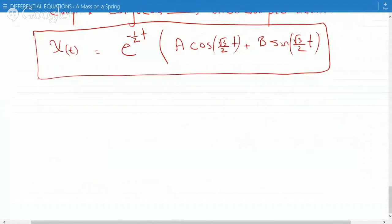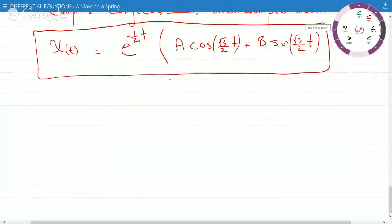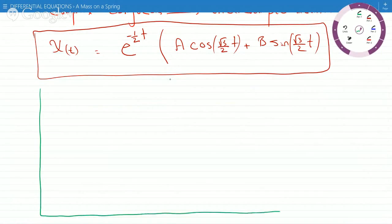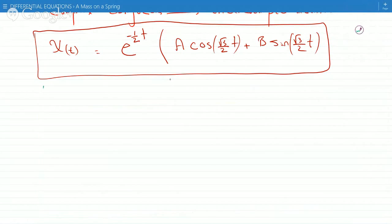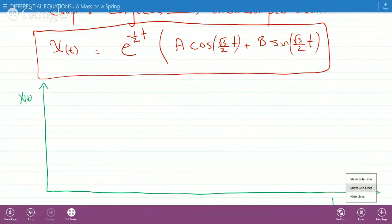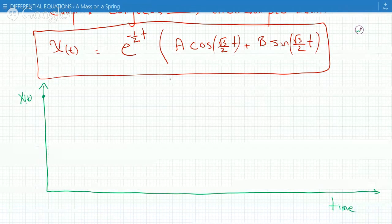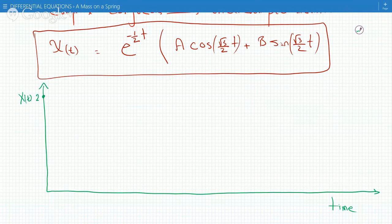So if we do show that as a numerical method, the graph will look something like this. So this is time here and this is x. Technically we know that this starts at 2 because x(0) equals 2. And we know that eventually as t goes to infinity, it's going to decay to 0.